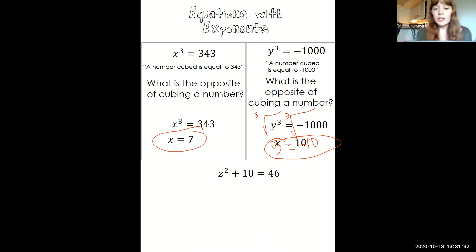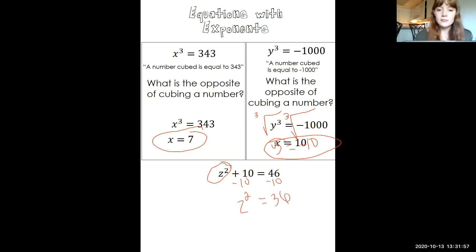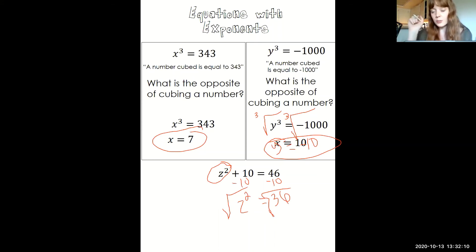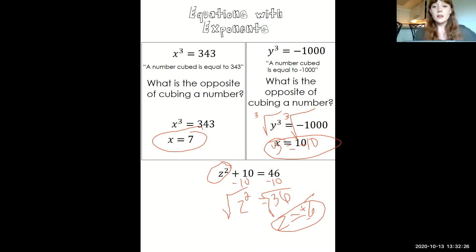Now we'll see equations with some extra steps. Before we do anything to both sides involving squaring, we need to isolate the squared term. What's stopping that is the plus 10, so we subtract 10 from both sides to get z squared equals 36. At this step, we have a number squared equals 36, so we take the square root of both sides. We take the square root when we see the little 2, and the cube root when we see a 3. This gives us z equals plus or minus 6, since 6 times 6 equals 36, and negative 6 times negative 6 also equals 36.